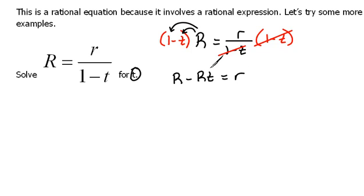Okay, so now remember we're still solving for t. I need to move everything that doesn't have a t in it over to the other side. So we're going to subtract r, capital R, from both sides. And that will leave us with negative rt equals r minus capital R.